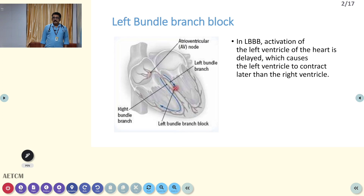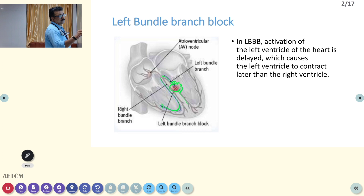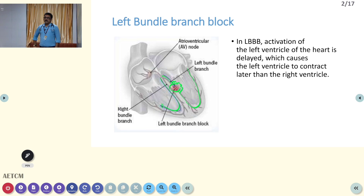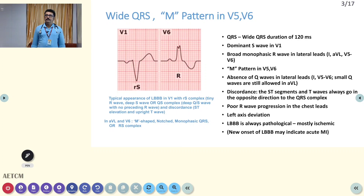In left bundle branch block, activation of the left ventricle is delayed. There is a problem in the conduction — it is slightly delayed. Conduction occurs, but due to some reason it is slightly delayed. The right side is going very fast, and with that fastness, left ventricle activation is not occurring. So the left ventricle contraction may be slightly delayed, and the electrical activity may also be slightly delayed on the ECG.